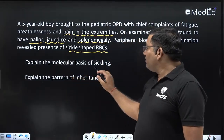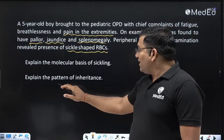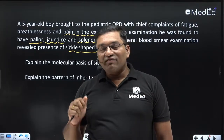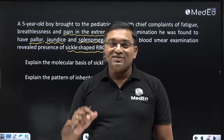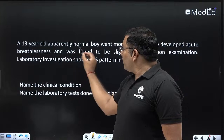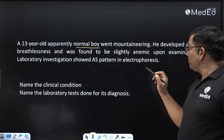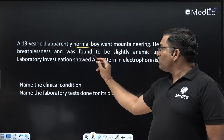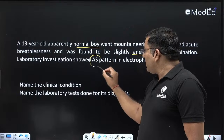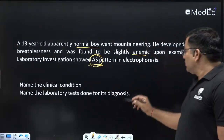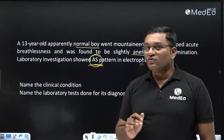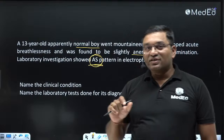The questions posed are: explain the molecular basis of sickle cell anemia, and explain the pattern of inheritance. There are two types: sickle cell disease proper and sickle cell trait. A second case involves a 13-year-old apparently normal boy who went mountaineering, developed acute breathlessness, and was found to be slightly anemic. Laboratory investigation showed an AS pattern on electrophoresis. The clinical condition is sickle cell trait, and the diagnostic test is electrophoresis.